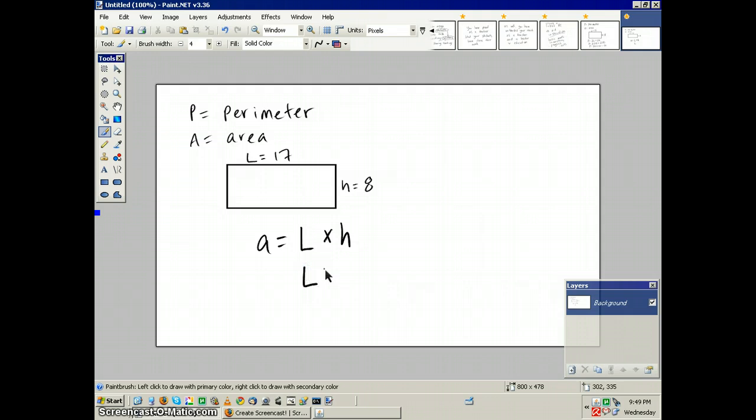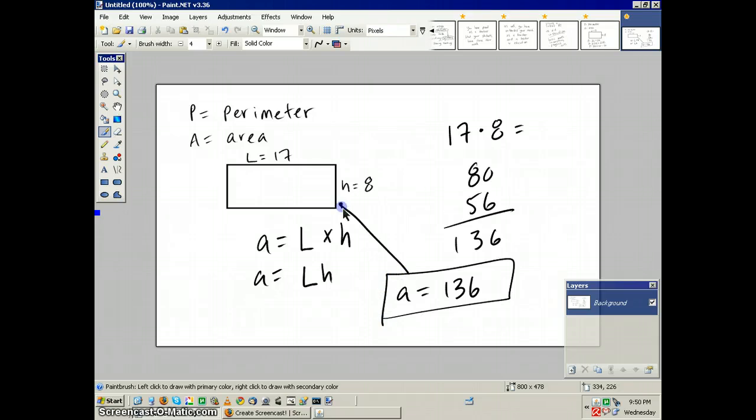Or it could also be represented as LH. Needless to say, 17 times 8 equals what? Now we could do this in our head. 8 times 10 is 80, 8 times 7 is 56. So we know the answer is going to be 136. So the area equals 136 of that rectangle.